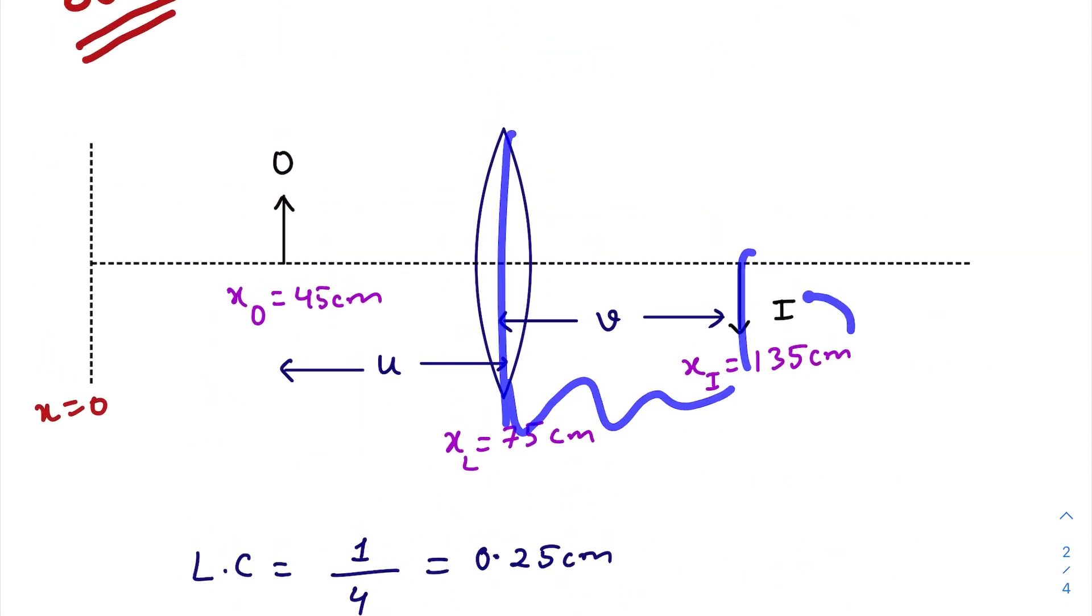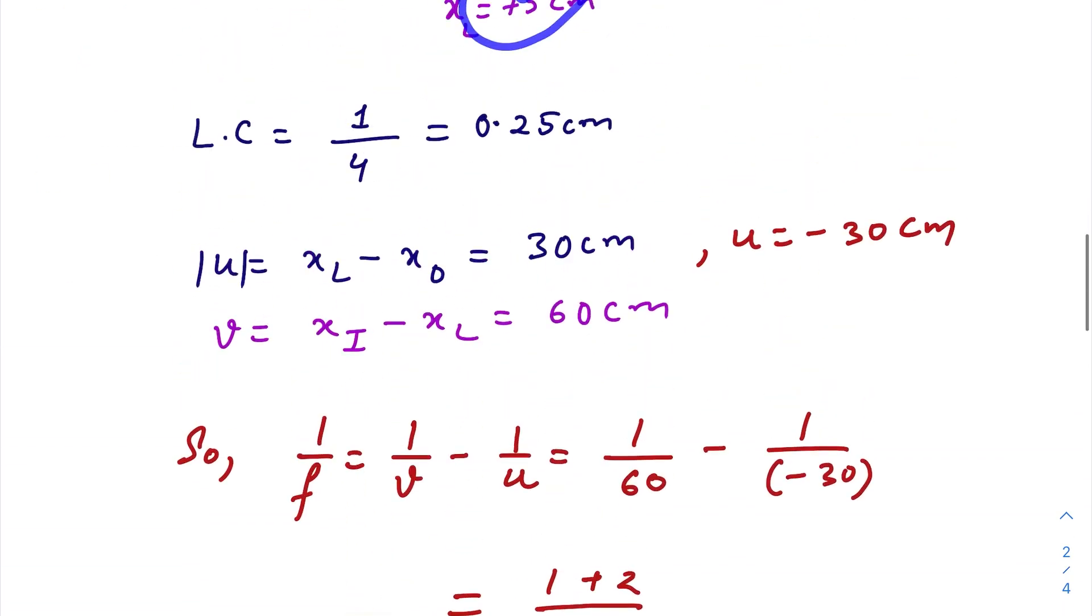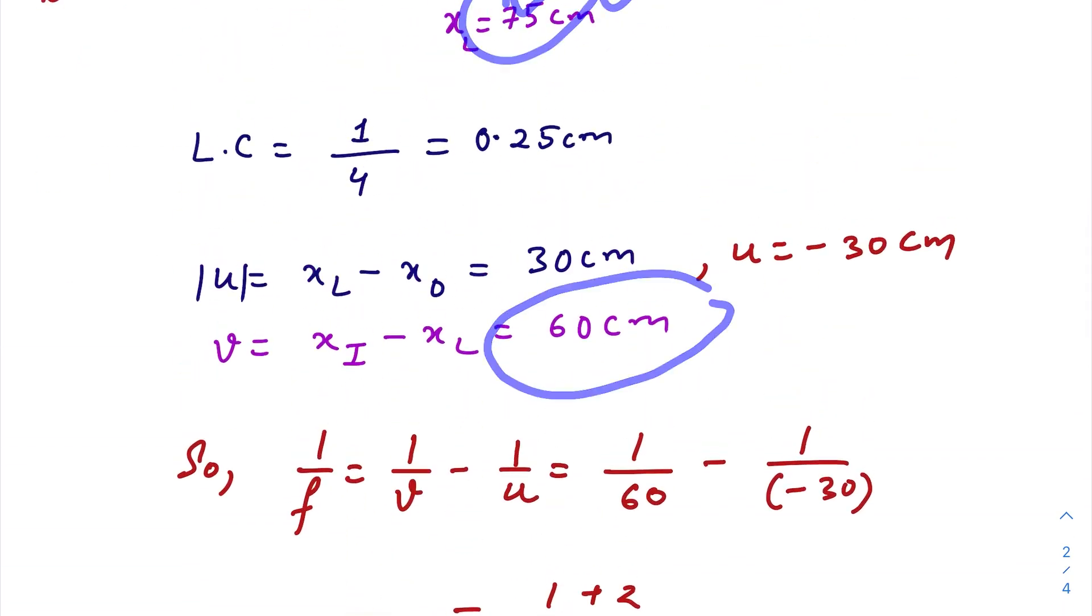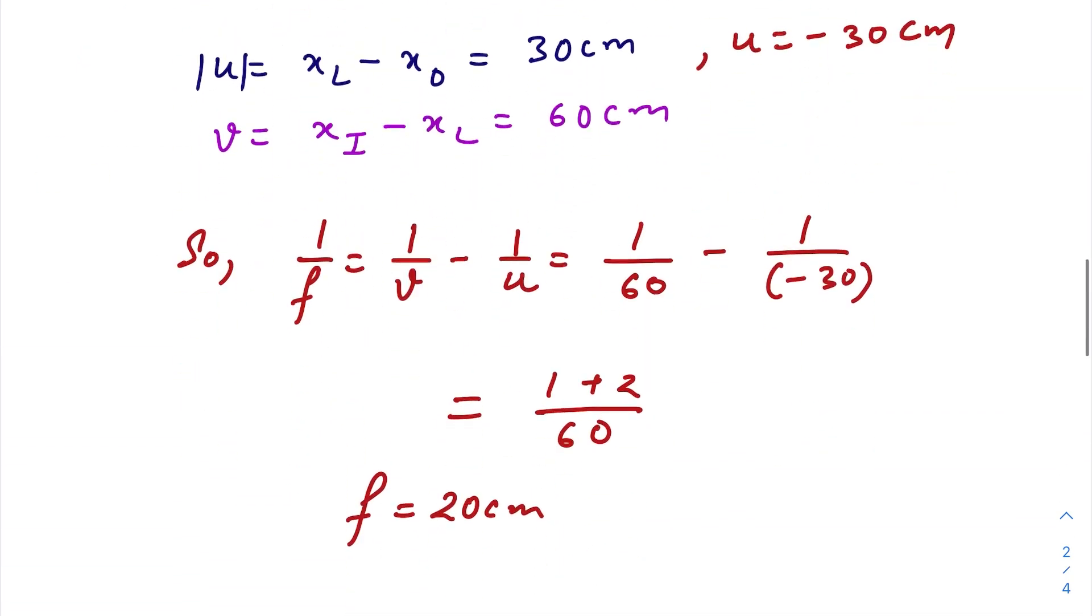While calculating the focal length, we will use this lens formula. So 1 by f equals 1 by 60 minus 1 by minus 30, we'll get 20 centimeter. But our actual question was to find out the percentage error.